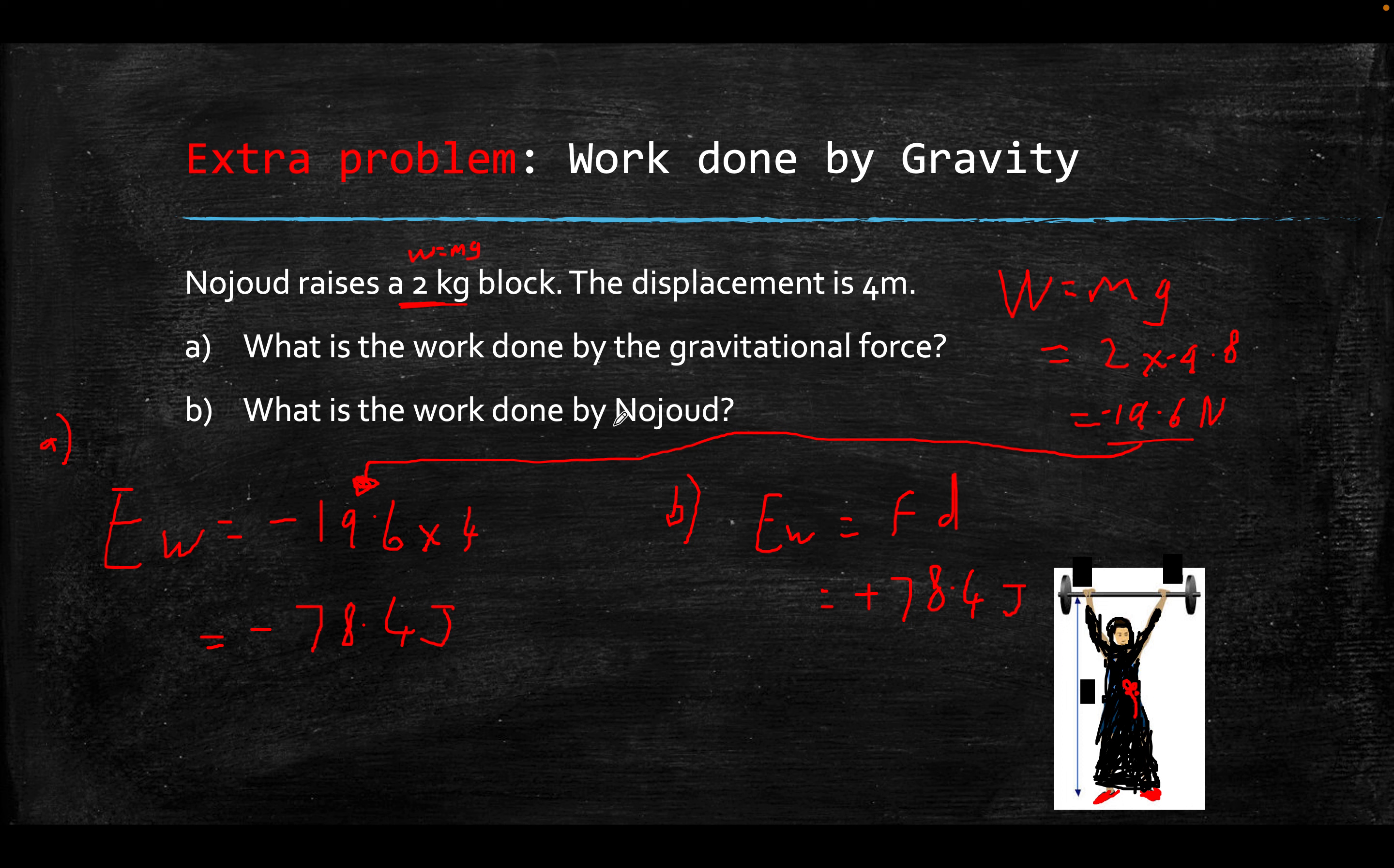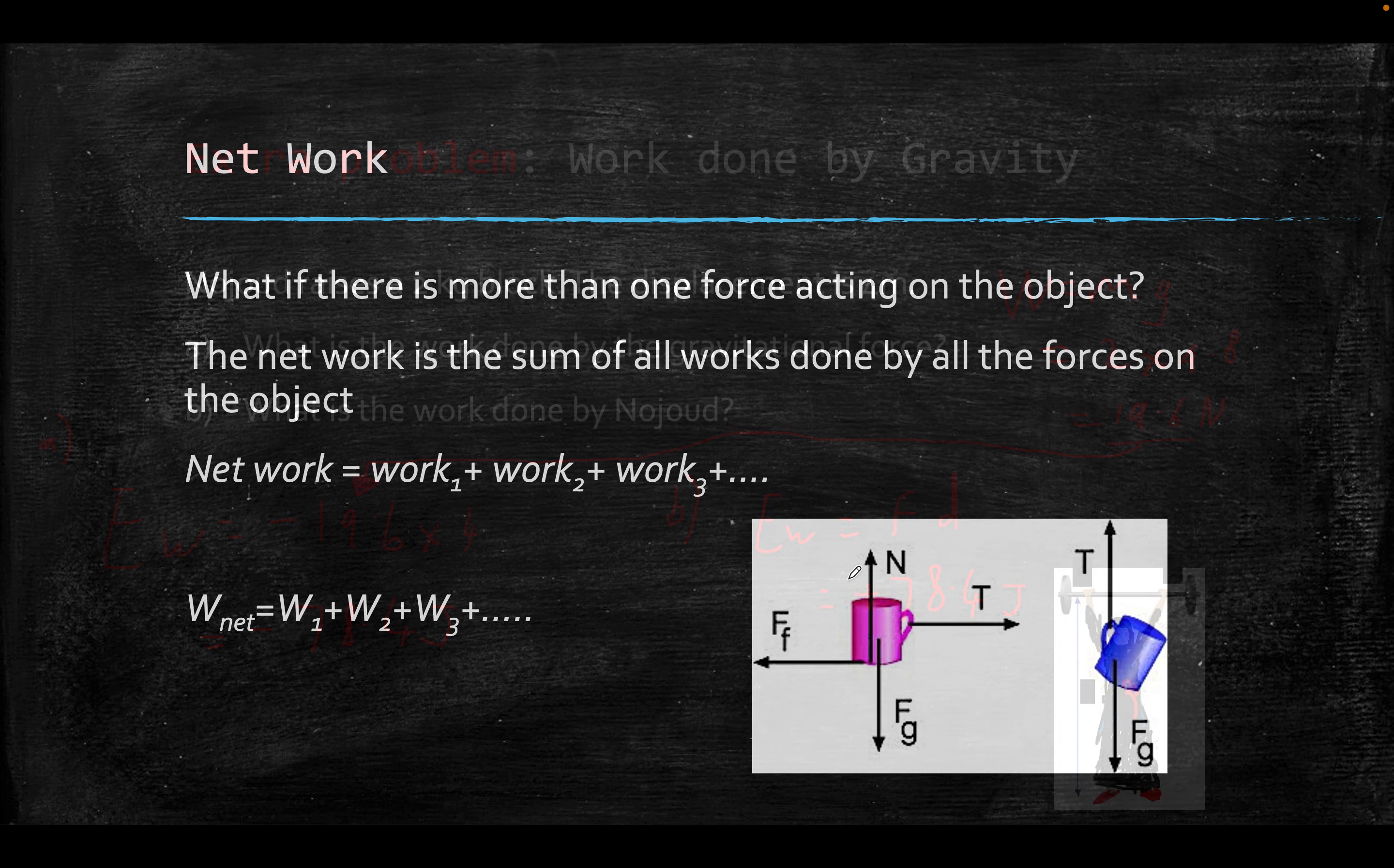If I wanted to work done by Nojirud, she is pushing it up. So it will be the positive force times distance. Same thing. She's taking the same block, the 2 kilogram block, 19.6, multiplied by the distance, which we already know is 4 meters. This is 4 meters. And then I multiply the 2 and you'll get positive 78.4. The number is exactly the same. One of them is negative. One of them is positive.